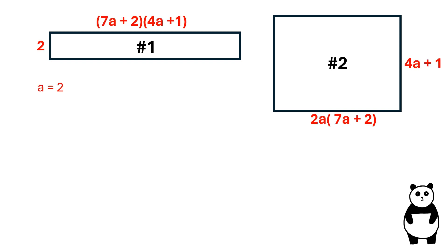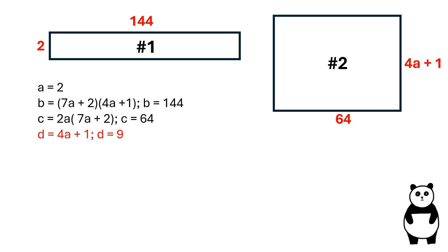If A is equal to 2, B is equal to 144, C is equal to 64, and D is equal to 9.